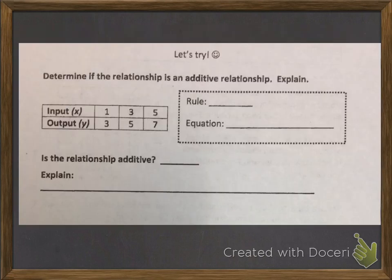Determine if the relationship is an additive relationship and explain. So we look at the table, we compare our input and our output values, and I notice that if I add 2 to this 1, 1 plus 2, I get 3.